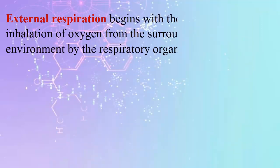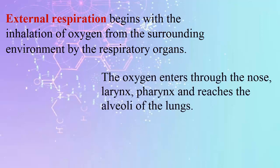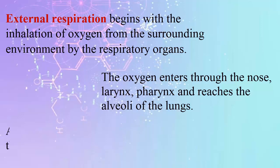The process of respiration is divided into two types: external respiration and internal respiration. External respiration begins with the inhalation of oxygen from the surrounding environment by the respiratory organs. Oxygen enters through the nose, larynx, and pharynx, reaches the alveoli of the lungs, then enters the blood vessels and flows to the heart and the rest of the body.